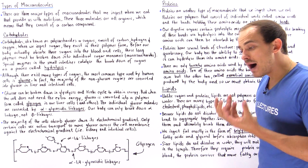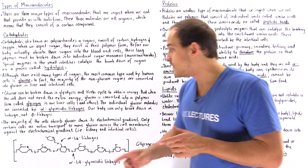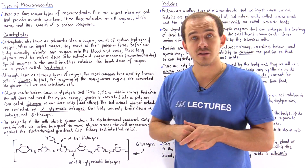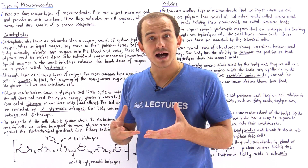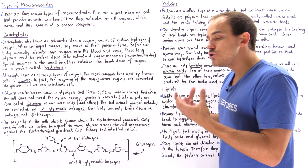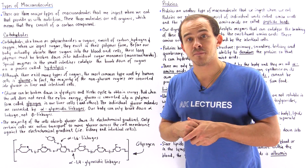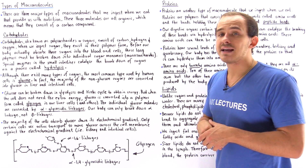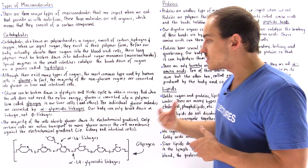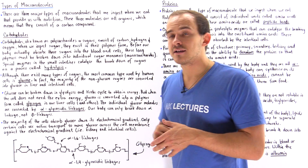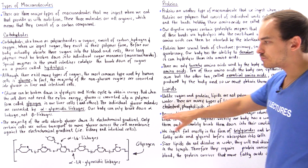Our body contains special proteolytic enzymes capable of cleaving the alpha-glycosidic linkages, so our body can easily break down those alpha-glycosidic bonds. However, other polymers of sugars — for example, cellulose found in plants — contain beta-glycosidic linkages, and our body does not contain the proteins to digest those beta-glycosidic linkages. So we can only break down the alpha-glycosidic linkages.